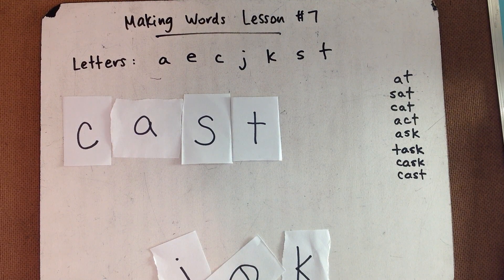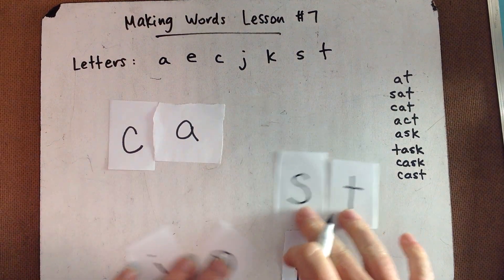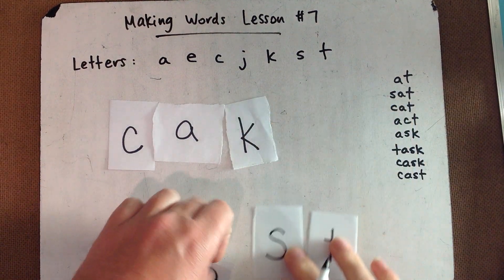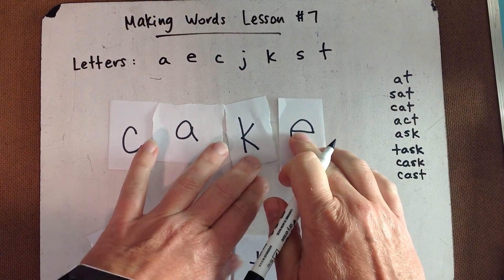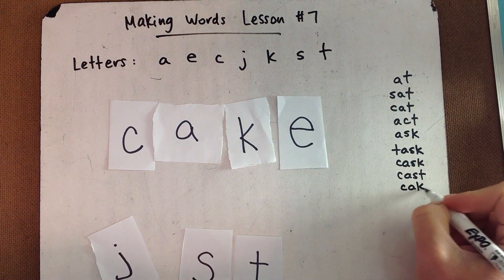What about the four-letter word cake? Cake. C-A-K. This one has a silent E on the end. We don't say cakey. We say cake. That makes that long A sound. Cake.